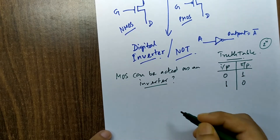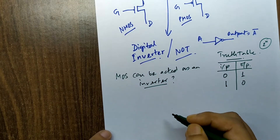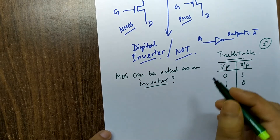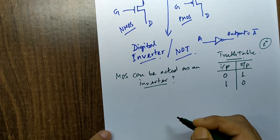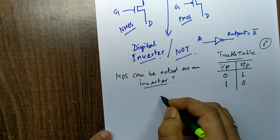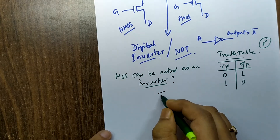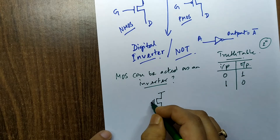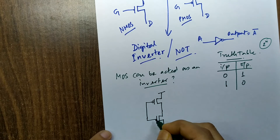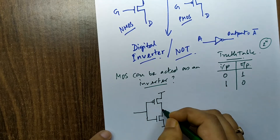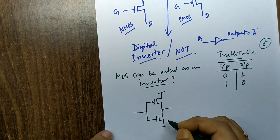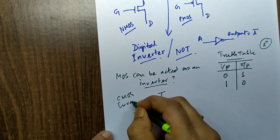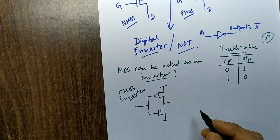You can refer to my VLSI basic videos on my platform for more detail. If we want to make an inverter, we need one PMOS and one NMOS. When we design a CMOS circuit — using the combination of one PMOS and one NMOS — we get the CMOS inverter circuit. In the CMOS inverter, the input is applied here and the output is taken accordingly.